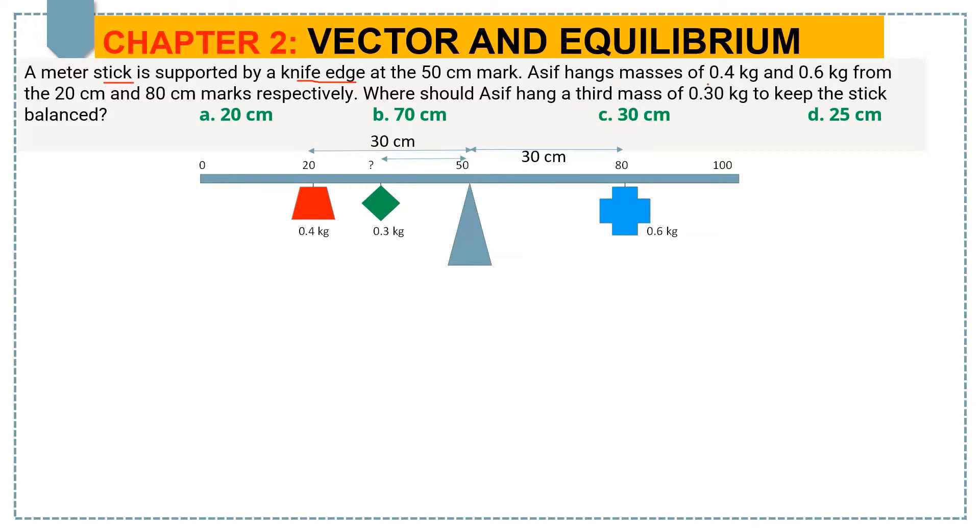Asif hangs masses of 0.4 kg and 0.6 kg from 20 cm and 80 cm marks respectively. Now the question is: where should Asif hang a third mass of 0.30 kg to keep the stick balanced?